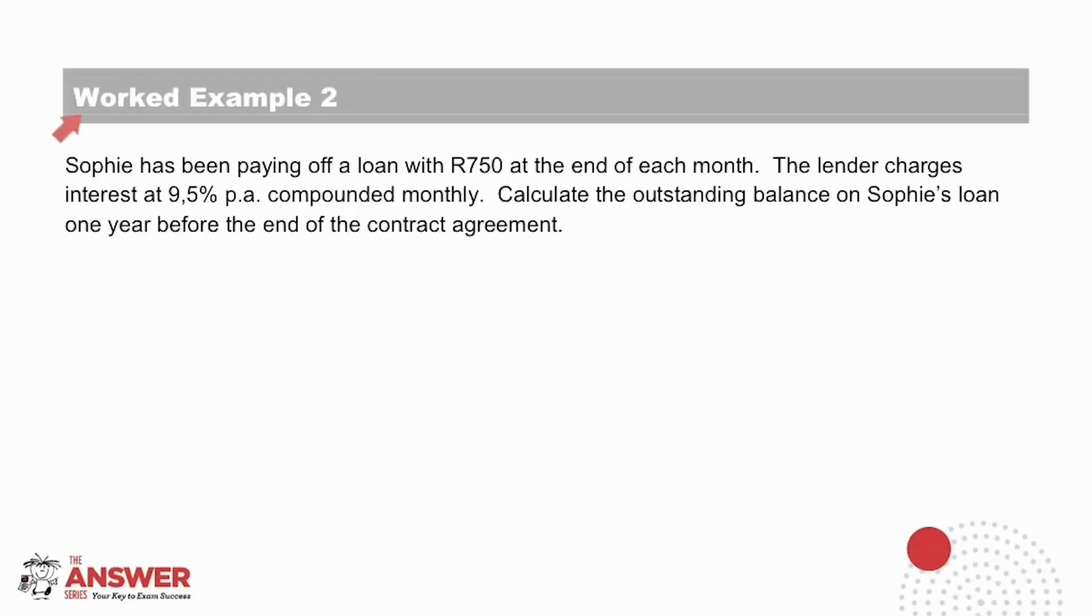Let's have a look now at worked example 2 to illustrate how to use this method. Sophie has been paying off a loan with 750 rand at the end of each month. The lender charges interest at 9.5% per annum compounded monthly.